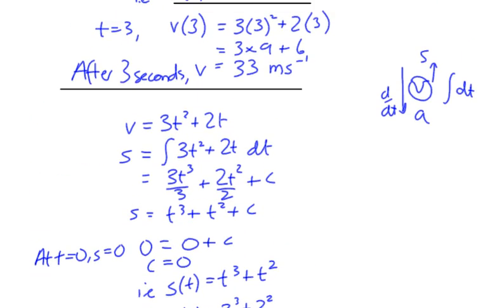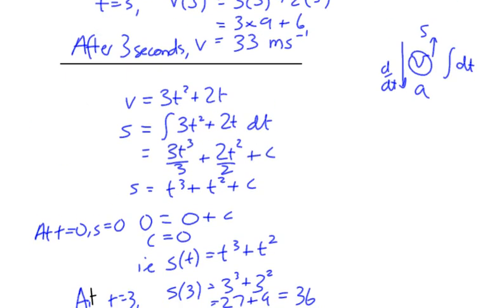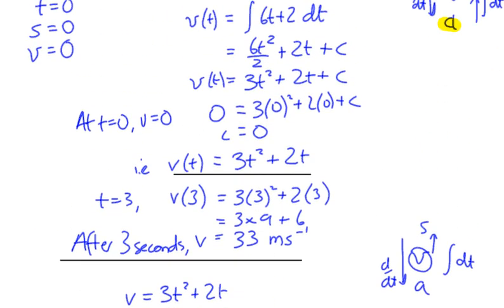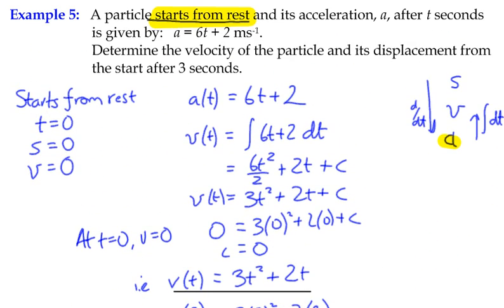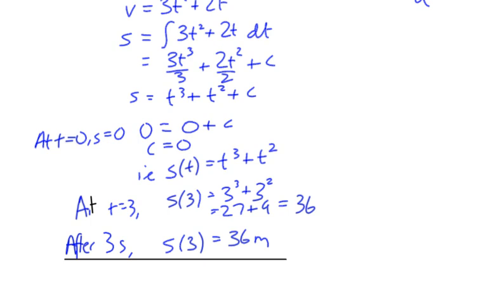So after three seconds, the displacement is 36 metres and the velocity is 33 metres per second. We've derived all of that just from the original acceleration function, and we can use our calculus to work out other things involved. There's one other example to look at next, just to keep exploring different issues with rectilinear motion.